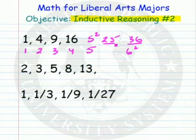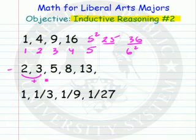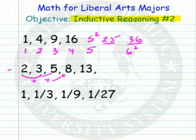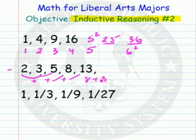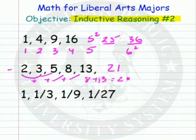This next example is interesting because if you look at it, 2 plus 3 equals 5, 3 plus 5 equals 8, 5 plus 8 equals 13. So your next term would be 8 plus 13, which equals 21. Then it would be 21 plus 13, which equals 34 — that's your next term after that.